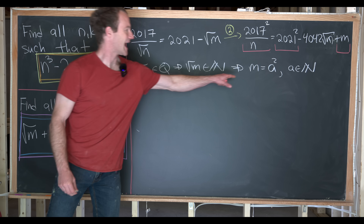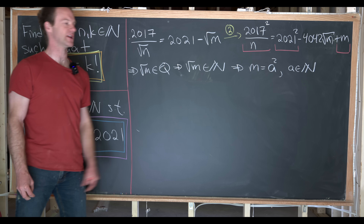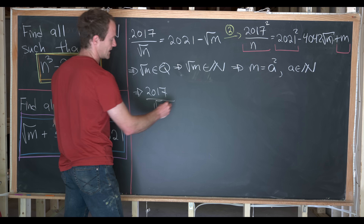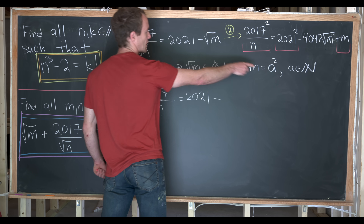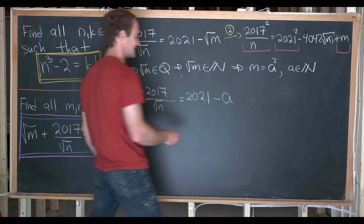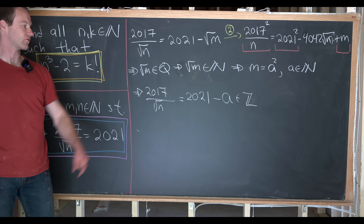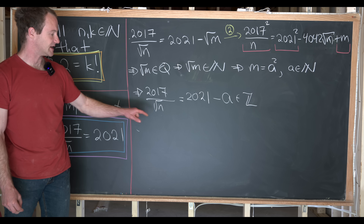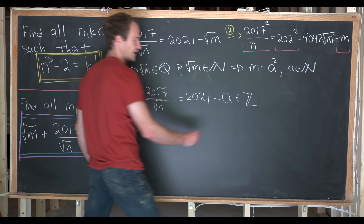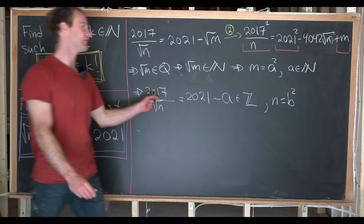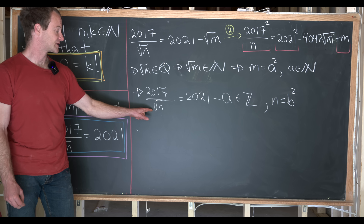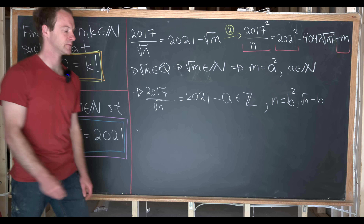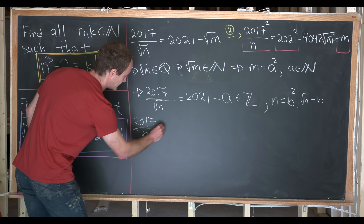Plugging this into our rearranged equation gives 2017 over the square root of n equals 2021 minus a. The entire right-hand side is an integer, so the left-hand side must also be an integer. This means two things: n is a perfect square — write it as b squared, by a parallel argument to what we did with m — and the square root of n, which is b, must divide 2017. So 2017 over b is an integer.